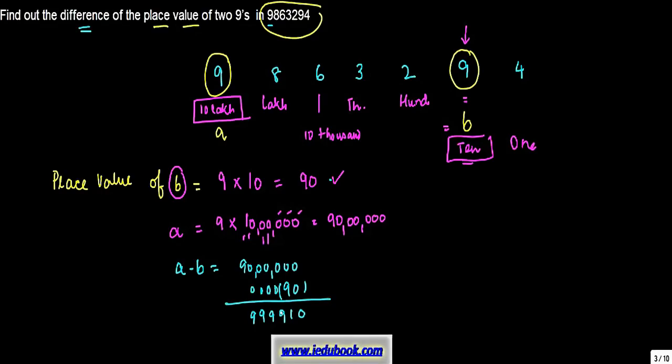9 minus 0 gives you 9, 9 minus 0 gives you 9, 9 minus 0 gives you 9, and here you have 8. So you've got 89,99,910 as the difference between the place value of two nines in this number.